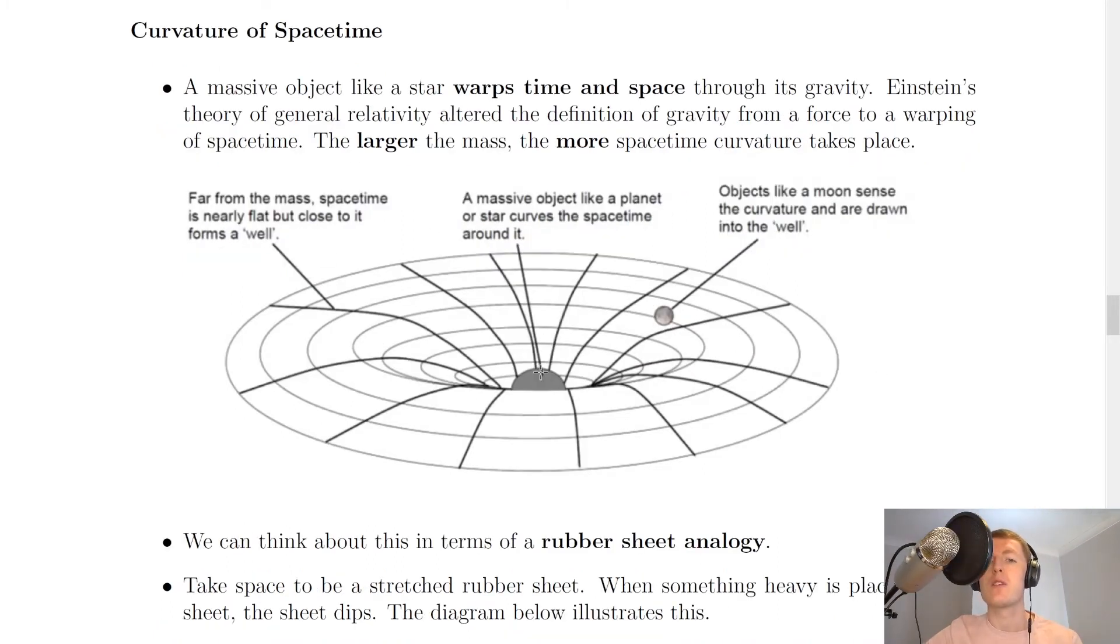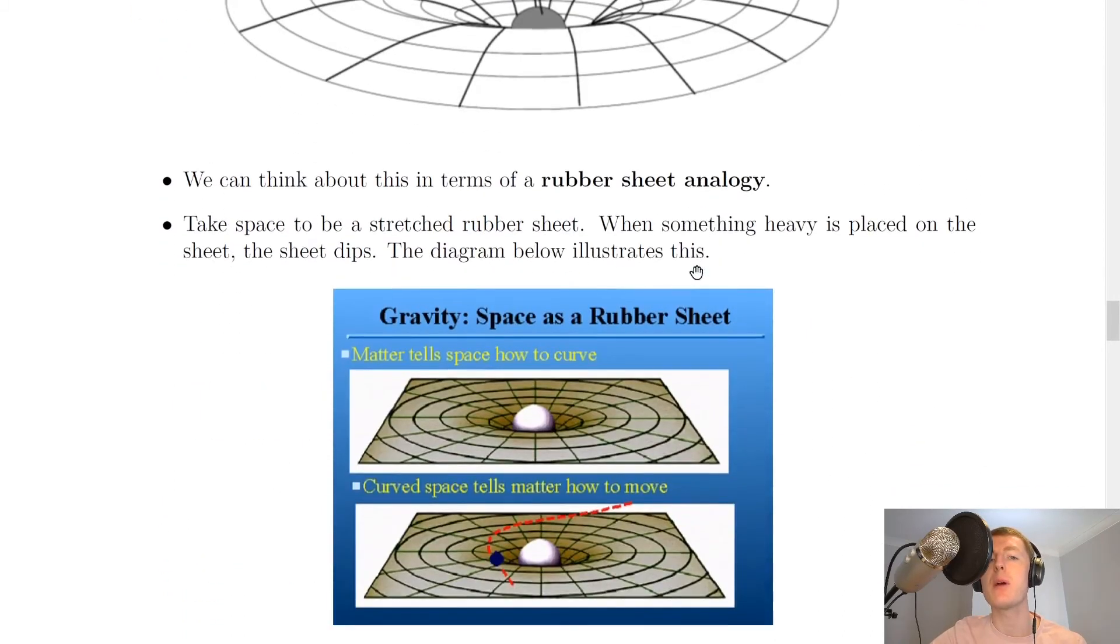And this is shown in the diagram here. So in the centre here, it says that a massive object like a planet or star curves the space-time around it and creates this sort of well. Far from the mass, space-time is nearly flat but close to it forms a well. And over here, objects like a moon sense the curvature and are drawn into the well.